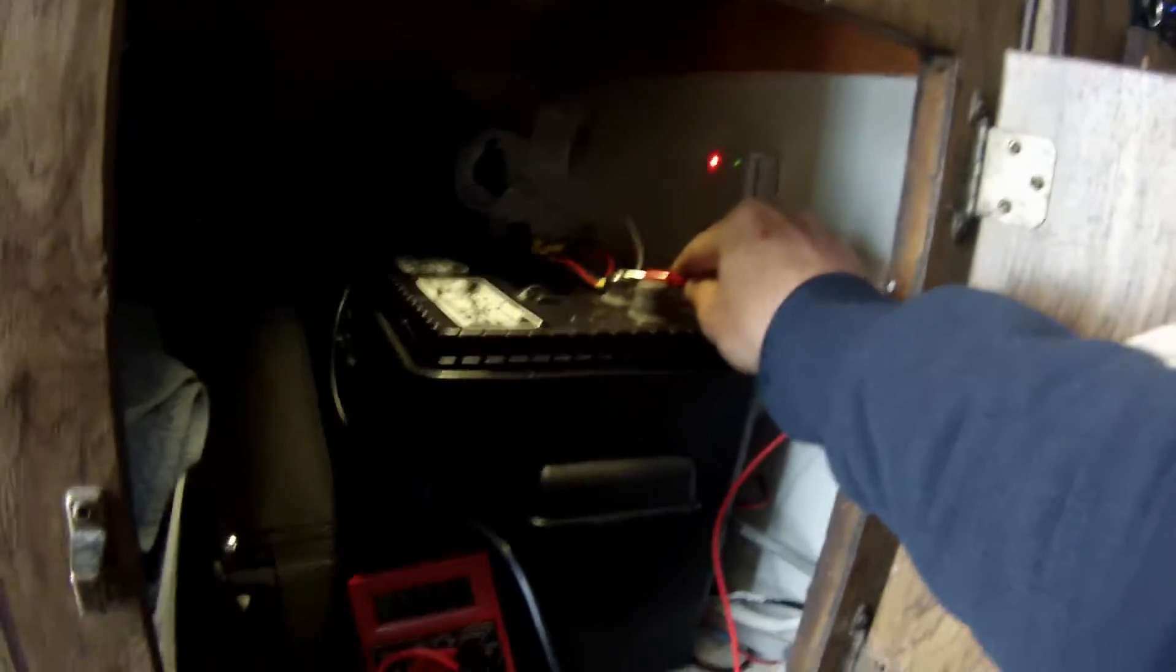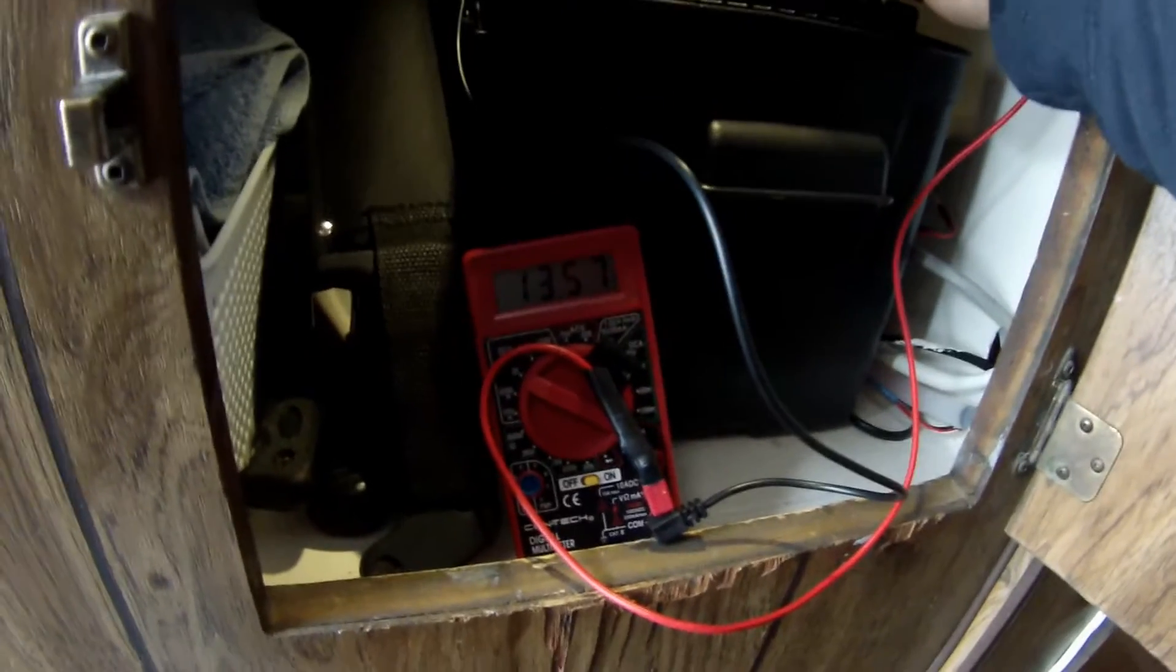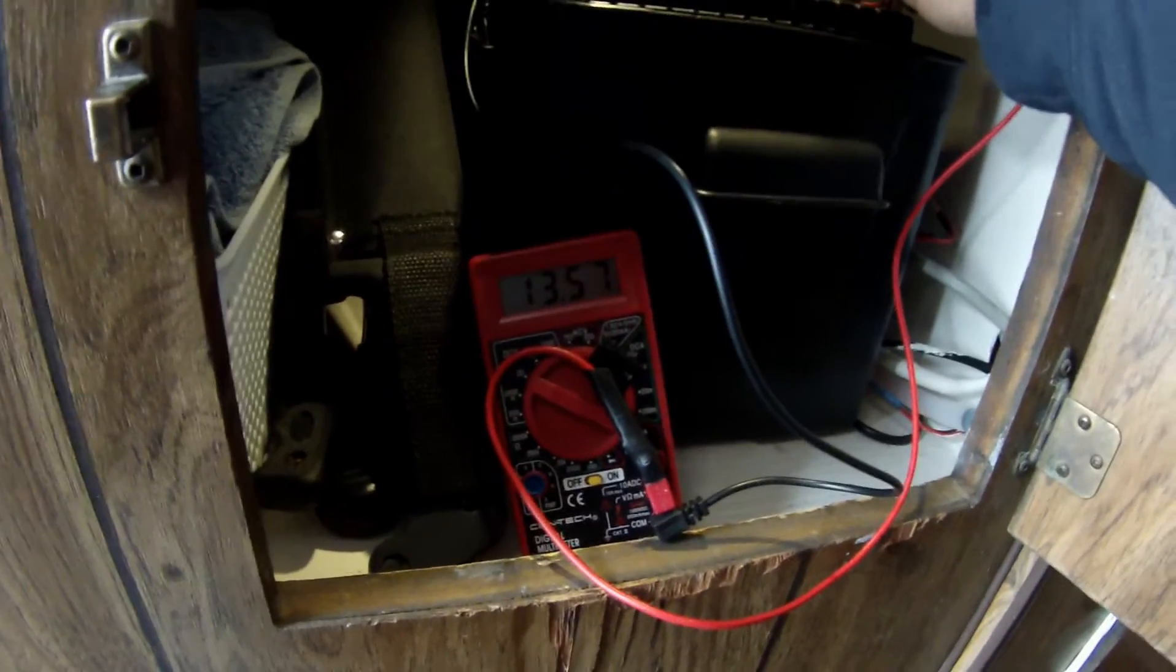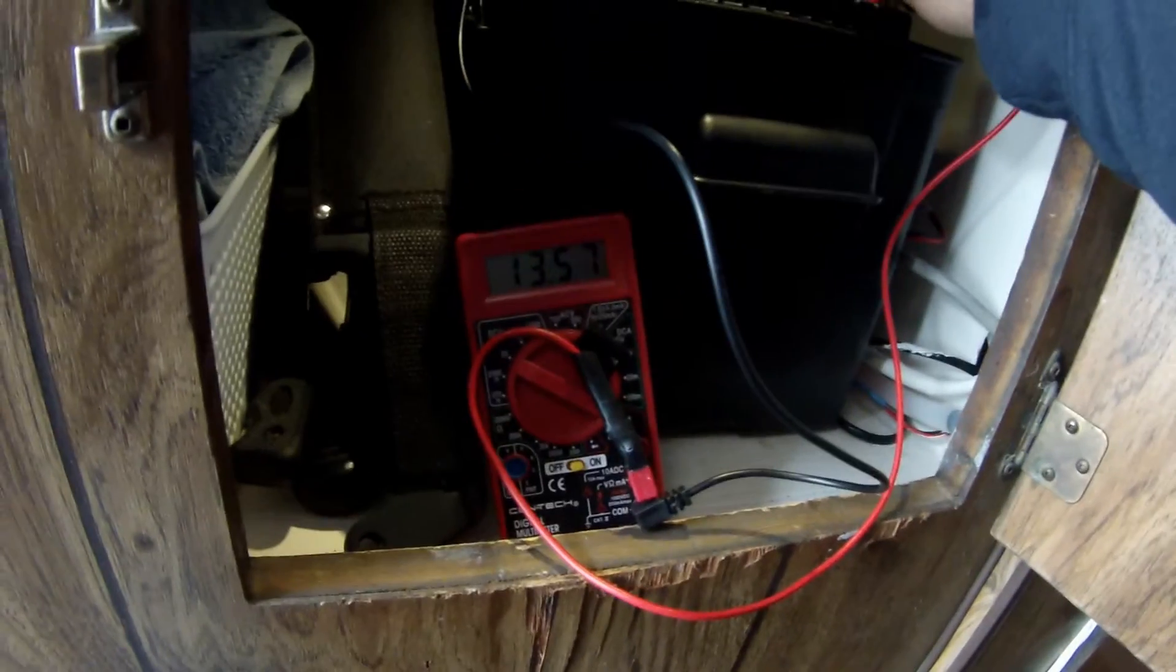Right now my battery is charging through my solar panel and it's very cloudy out. This one hasn't been out at all. My battery is now at 13.57 volts and just a little bit ago it was at 13.81.